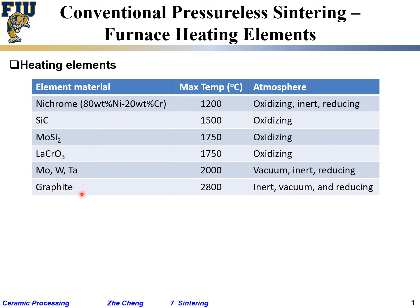Graphite — carbon — can be used up to 2800°C because carbon melts at 3500°C, so you are still well below the melting temperature, and it is electrically conductive. Compared to silicon carbide, graphite is much cheaper to manufacture and has a higher melting temperature. So if you are asking about using silicon carbide in an inert atmosphere, the first reaction would be: why not use graphite instead?